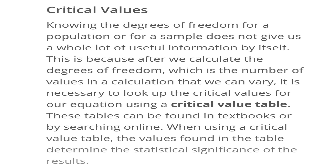Suppose the degree of freedom is 3 and it is a chi-square test — you have to look at df 3 at the 0.05 or 0.01 level of significance. You have to compare the calculated value with the table value. To find the critical table value, you first calculate the degree of freedom, then look up the table value. Only then can you tell whether the null hypothesis or research hypothesis is accepted or rejected.